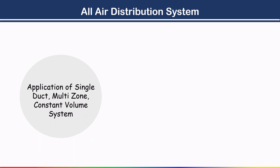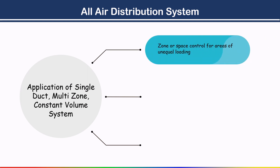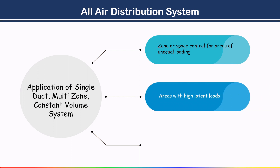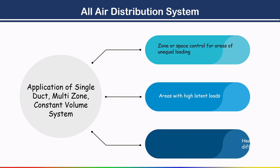Applications of the single duct multi-zone constant volume system include zone or space control for areas of unequal loading, areas with high latent loads, and heating or cooling of perimeter areas with different exposure. This concludes the discussion of all-air distribution system types in Part 1; the remaining types will be discussed in the next part.